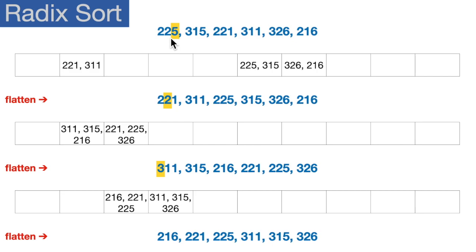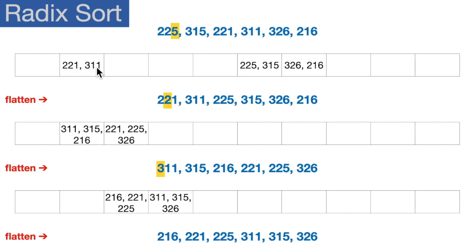Here's a list of six integers that we're trying to sort. We're going to look at the rightmost digit only on the first pass. So for 225, that's a five, and it goes into bucket number five. Then 315 — the rightmost digit is also a five — so we append that onto the same bucket. Notice 225 and 315 are in the order they were in the original list. Next, 221 goes into the one bucket, and 311 also goes into the one bucket. Then 326 goes into the six bucket, and 216 also goes into the six bucket. So we've sorted all six integers into the appropriate bucket based on the rightmost digit.